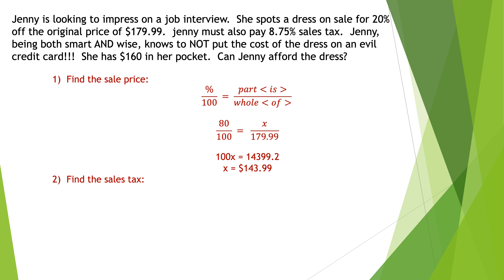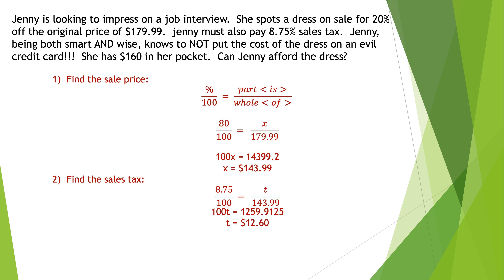If you take off 20% instead of 25%, the sale price is a little higher at $143.99. Now you have to pay tax, and this time the tax rate is 8.75%. I put 8.75 over 100 for percent, and the unknown tax is part of the new cost of $143.99. Cross multiply: 100t equals 1,259.9125. Dividing by 100, I get $12.60 — it rounds up because of the .99.